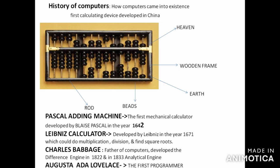The first major device was the Abacus — the first mechanical device used for calculation, developed in China. It is made up of a wooden frame with rods, and each rod has beads. The frame is divided into two parts: heaven (upper) and earth (lower). Each rod in heaven has two beads and earth has five beads. It could perform addition, subtraction, multiplication, and division.